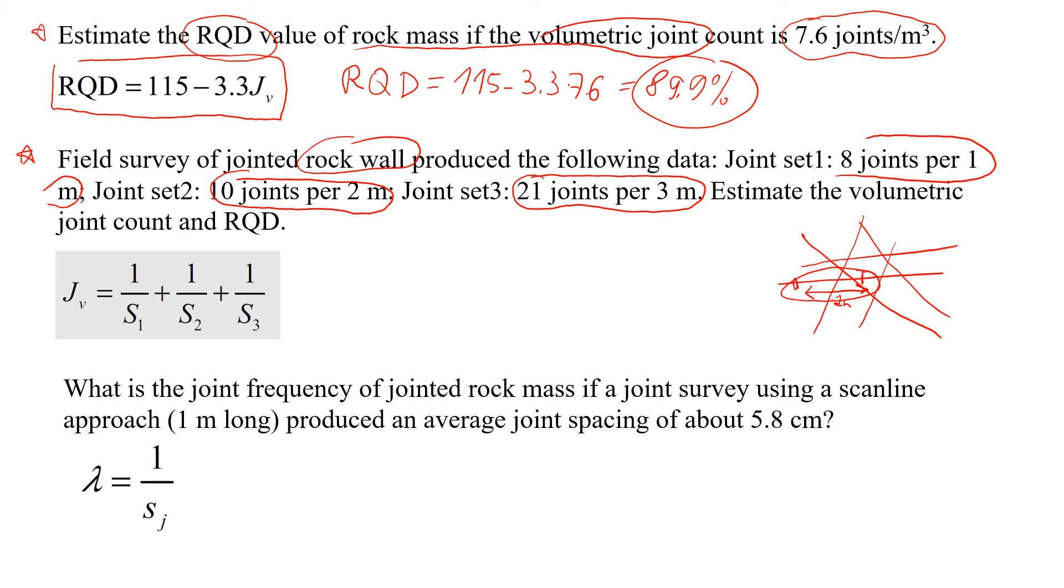So that's the data that we have. And this data will give us some idea about the volumetric joint count. So that's the formula. I'm just going to show you how we use the formula. We'll start with the first joint set, eight joints per one meter. Plus the second set of joints, which will give us 10 joints over two meters. And for the third one, it's going to be 21 joints over three meters.